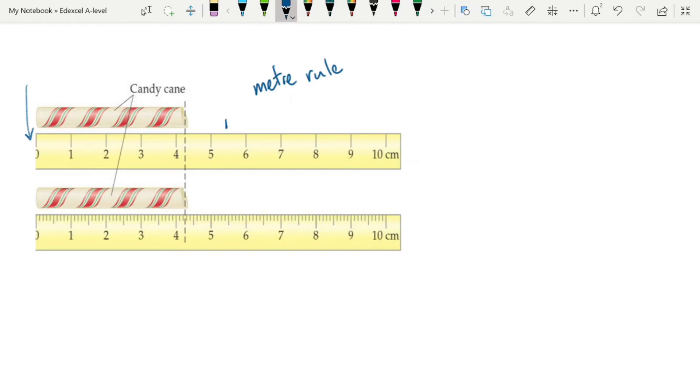So the resolution of this one, resolution tells you the smallest scale division. So the resolution of that one is one centimeter and the resolution of this one is obviously one millimeter or 0.1 centimeters.